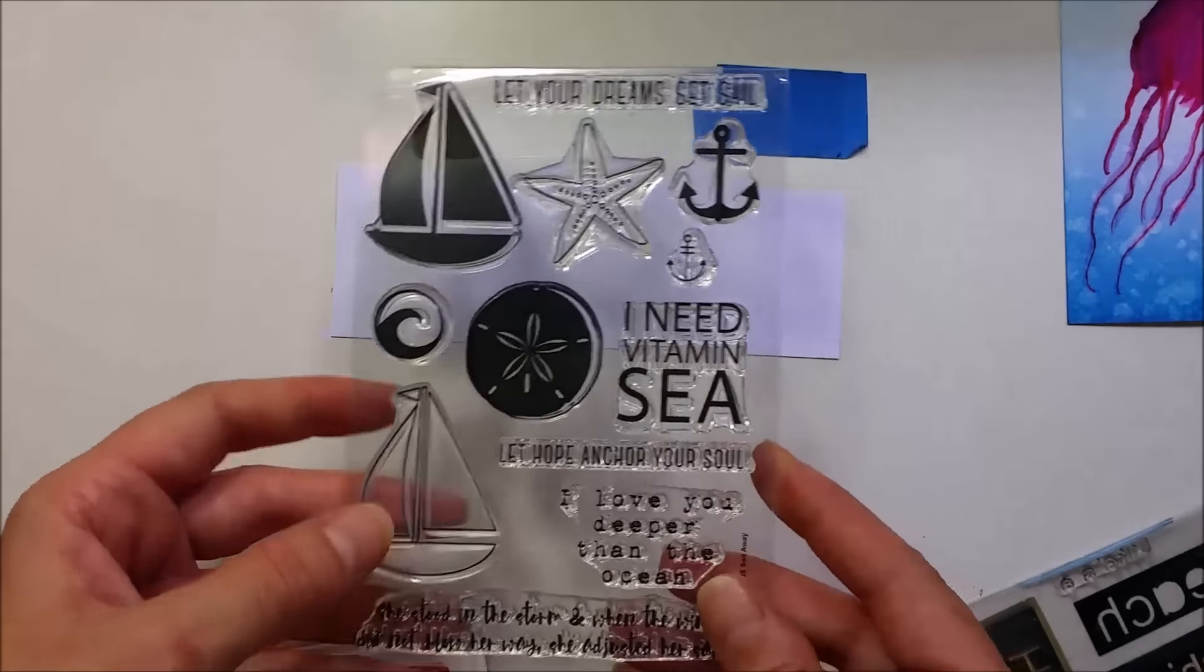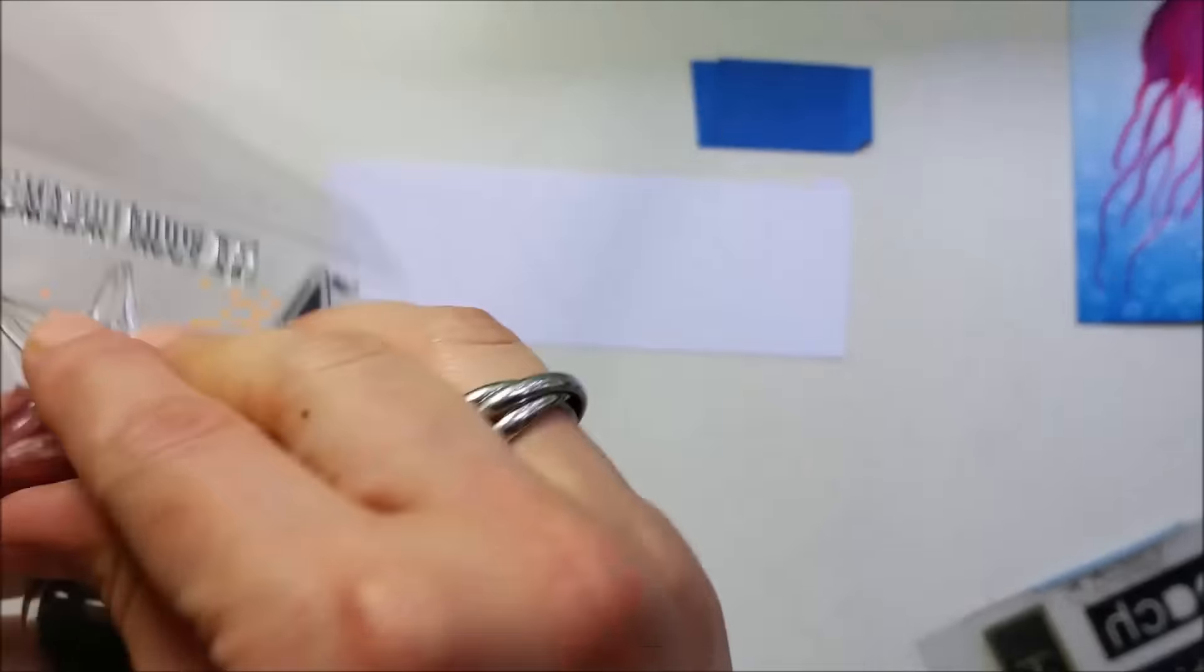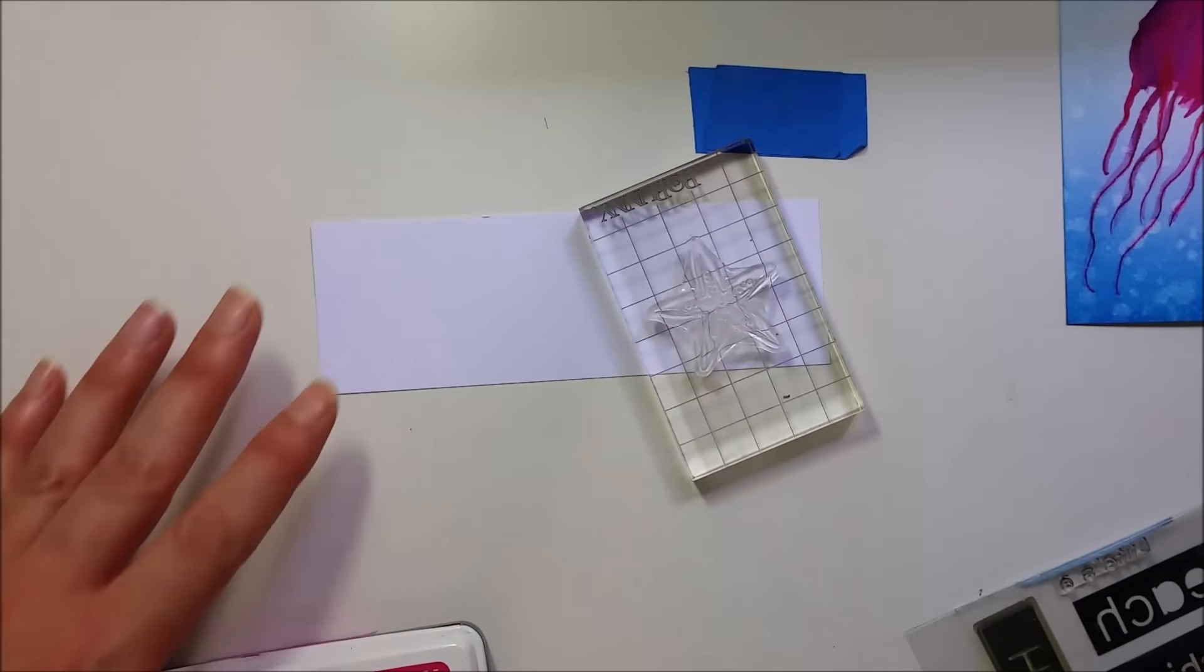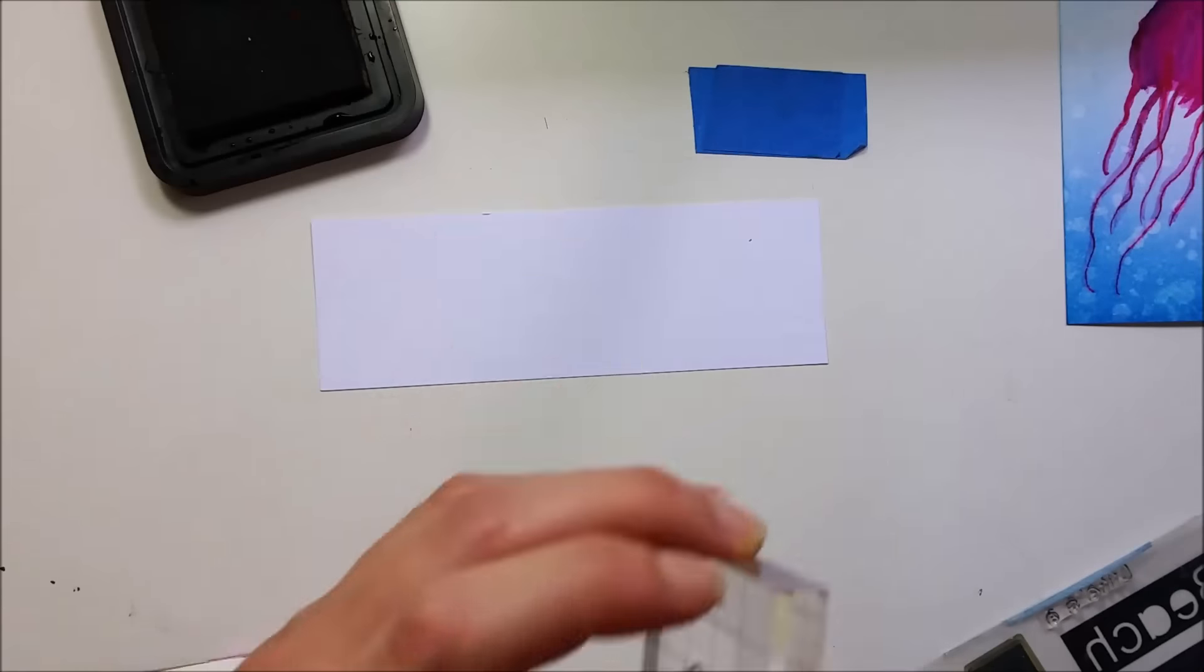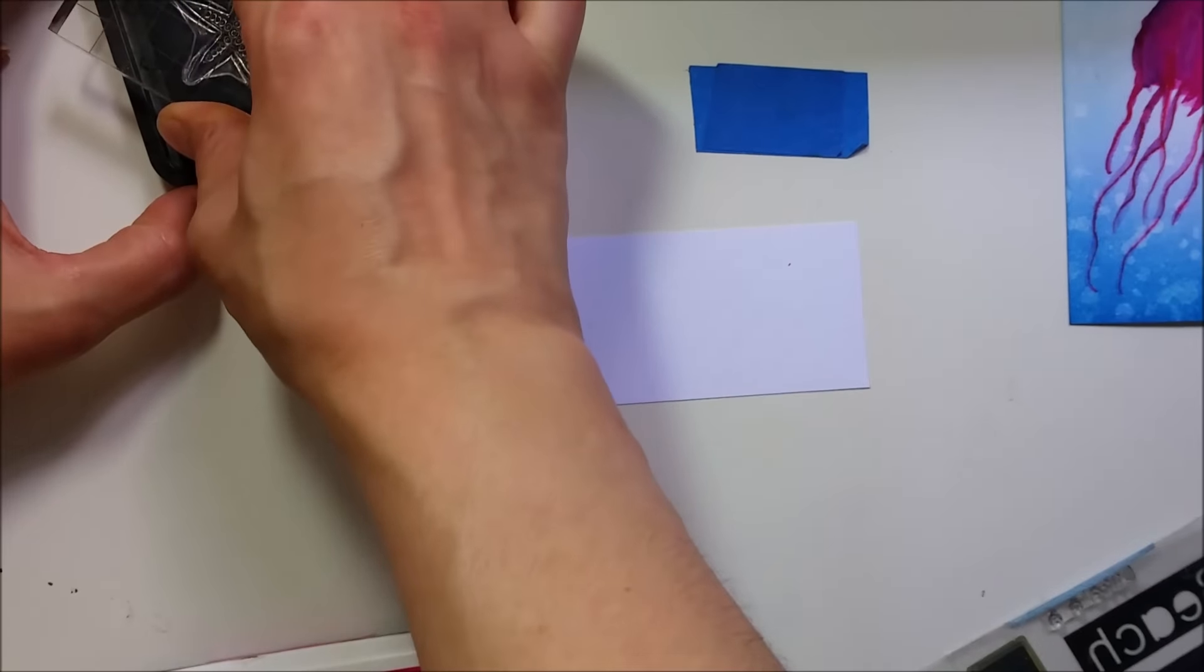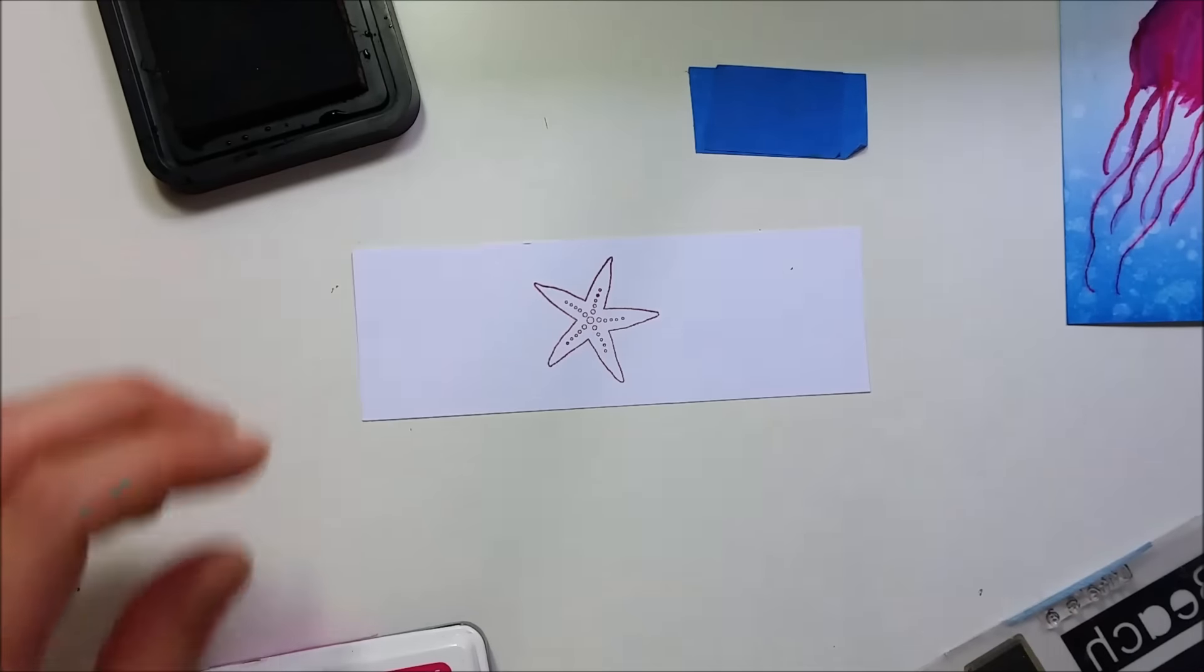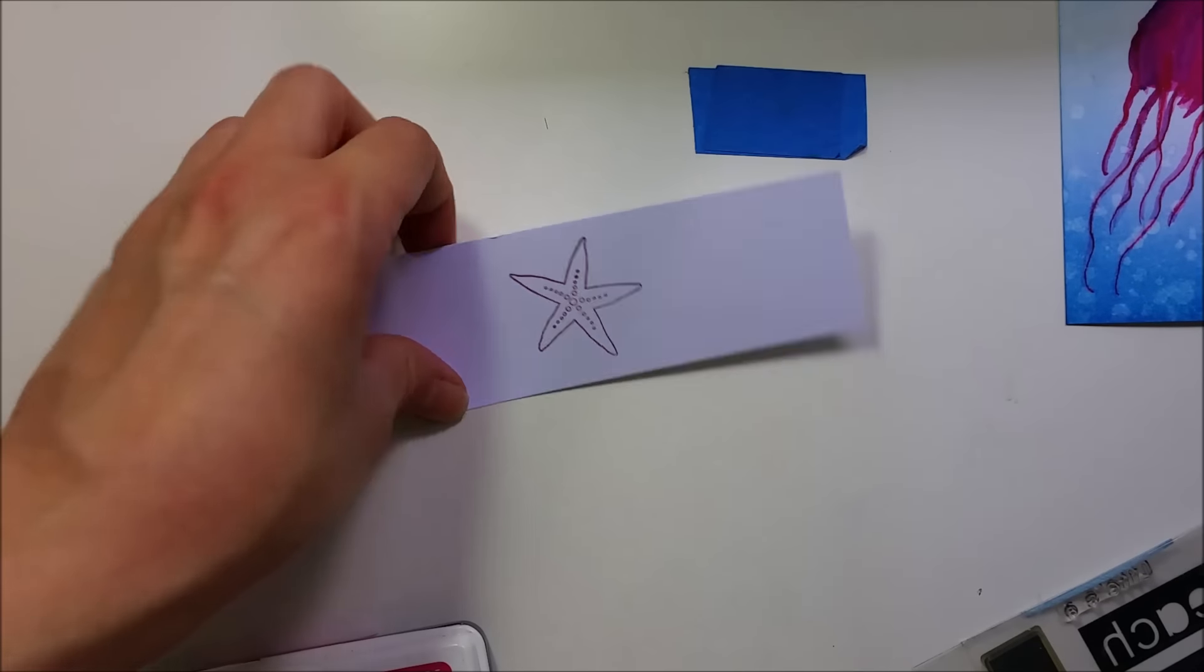And I think I want one more element, so I'll be using this set and I'll stamp this starfish. And I think I'm gonna be stamping this in brown ink. I have this vintage photo here. I'm not gonna be coloring it. So I'm gonna trim this out.